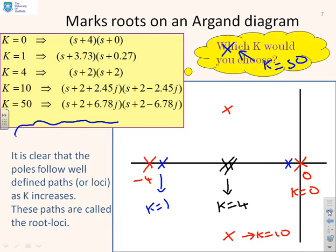So if I now say what's the loci here, how have these poles changed as I increase K? You can see what's happened is this pole has gone this way, this pole has come this way. They've joined together when K equals 4, and then one has gone that way and one has gone that way. So you can see the loci of the closed loop poles as K goes from 0 to infinity.